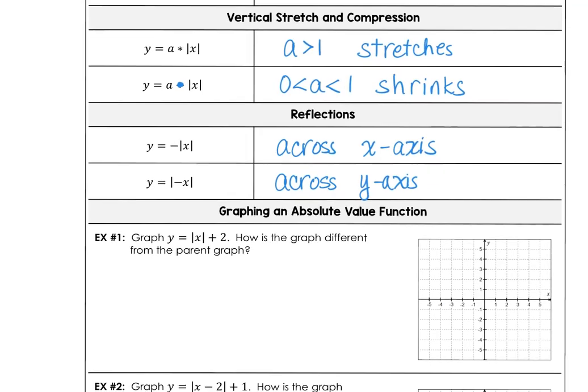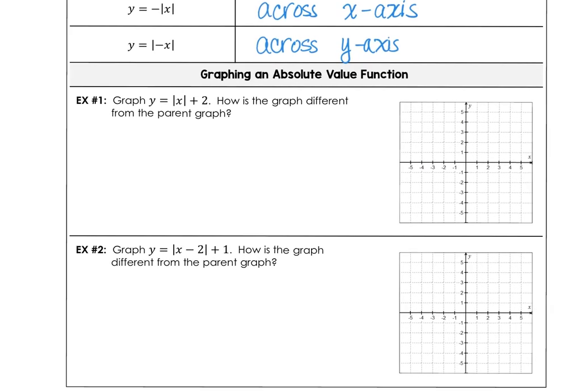Let's practice graphing some of these. Here we have y equals the absolute value of x plus 2, so that translates our parent function two units up. The parent graph doesn't alter its shape, it just shifts two units up.